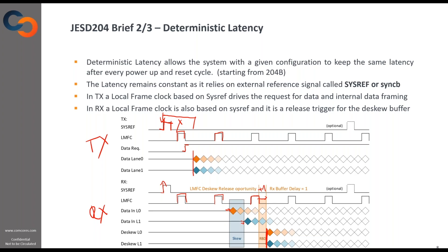If we measure from here to here, we also have some fixed time, plus some LMFC times and some number of multi-frame clock periods. This allows us to know exactly or maintain a constant latency in the system. We can measure how much it will take, and we know that from every reset to every reset or initialization, the latency stays the same.